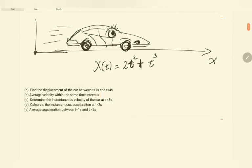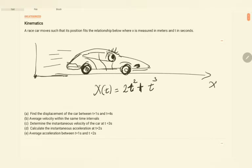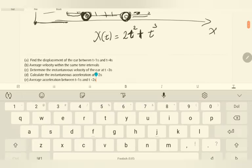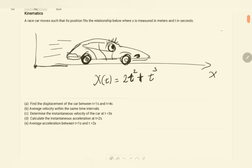We will also find the average velocity within the same time interval. Part c determines the instantaneous velocity. Part d asks us to calculate the instantaneous acceleration at t = 2 seconds. And lastly, part e will find the average acceleration between t = 1 second and t = 2 seconds. As always in any physics problem, we start by identifying the given information and the requirements.